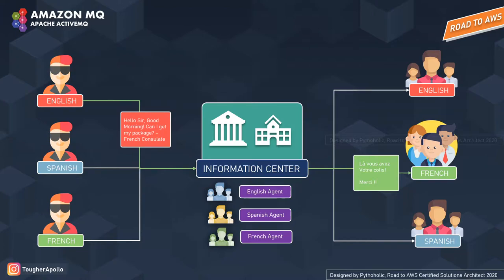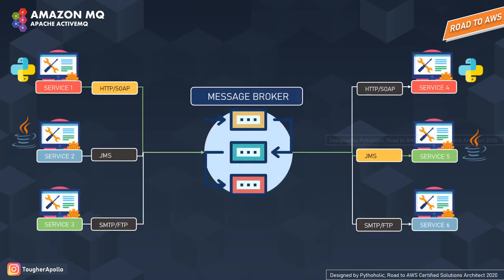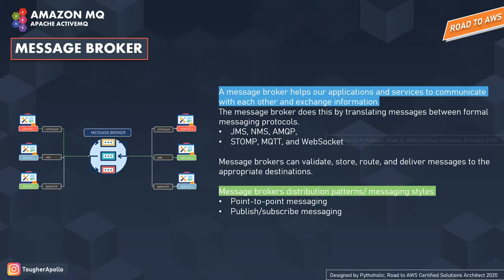Just like you were not able to talk to services directly, and even if you didn't understand the department's language, you were still able to communicate. This is what the message broker helps us with. A message broker is a service that helps applications, systems, and services to communicate with each other and exchange information. Even if the applications are written in different languages, you can still send your messages and communicate. The message broker does this by translating messages between formal messaging protocols like JMS, NMS, AMQP, STOMP, MQTT, and WebSockets.